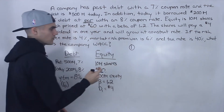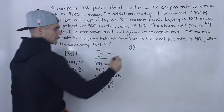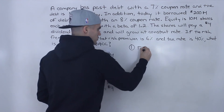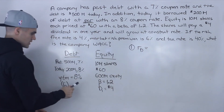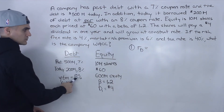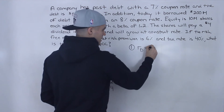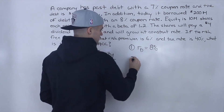So the first step was finding the cost of debt, which is RD, and we mentioned that is the yield to maturity. The yield to maturity is 8%, so that is step one.